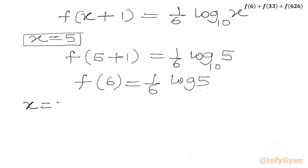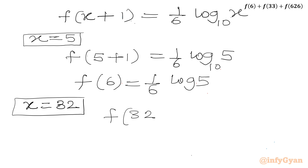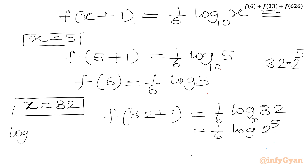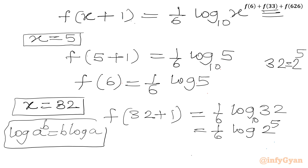Now let us apply x = 32. So f(32+1) = f(33) = (1/6) log 32 base 10. We can write 32 as 2^5, so this becomes (1/6) log(2^5) base 10. Using the property log(a^b) = b·log a, the 5 comes down as a multiplier: f(33) = (5/6) log 2 base 10.